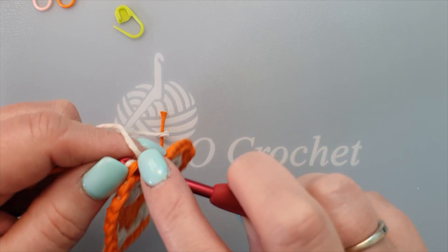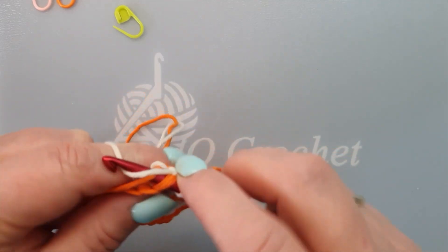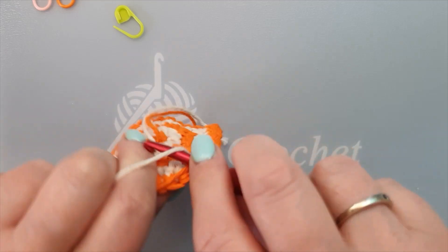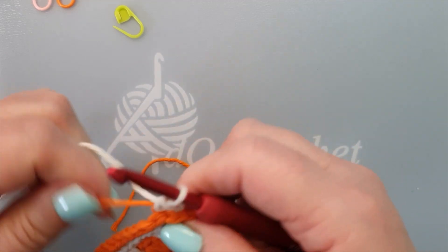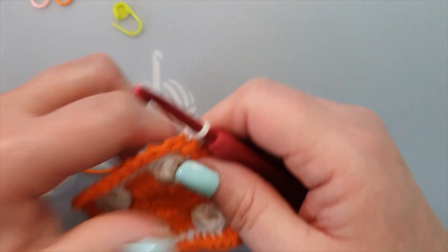So let me only get one loop and not that white one just this. Guide that orange yarn or that other color and make your single crochet and then we're going to follow the pattern which is a corner.